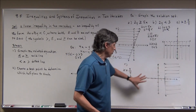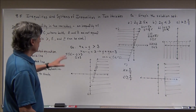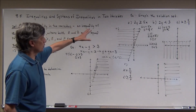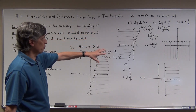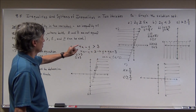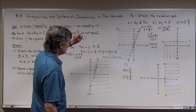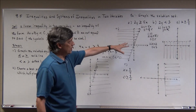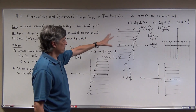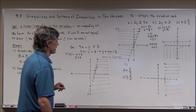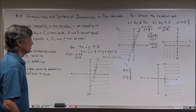When you take that test point, it either makes the inequality true or false. If false, you want the opposite half. If true, you want the half containing the test point. We're going to continue by looking at systems of two or more inequalities, and also inequalities in two variables that are not linear — parabolas, circles, and more.